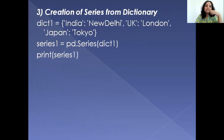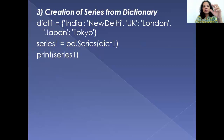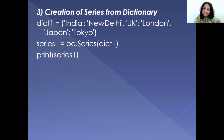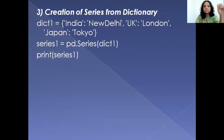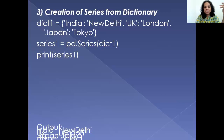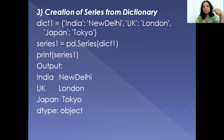Now let's talk about creating a series using a dictionary. I have a dictionary called dict_one with key-value pairs: India–New Delhi, UK–London, Japan–Tokyo. When you create a series from a dictionary, the keys of the dictionary become the indexes of the series, and the values remain as values. So instead of showing 0, 1, 2 as index numbers, it shows India, UK, and Japan as the indexes. The dtype is object because the values are strings, and strings are termed as objects in pandas.